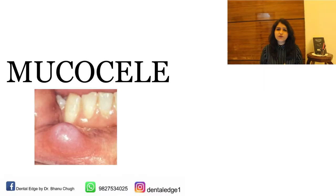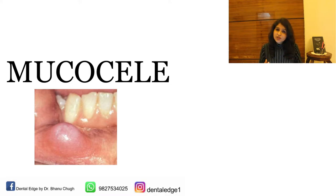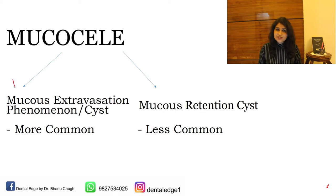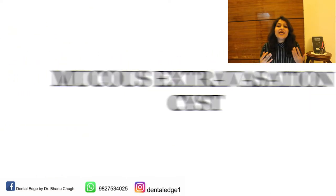Mucocele is a common lesion of the oral mucosa and it's a clinical term based on the location of the lesion, the way the lesion appears, how it feels on palpation, the age of the patient, and the history given by the patient. Histopathologically, once the lesion is submitted for biopsy and the slide is examined, it is of two types: a mucus extravasation cyst, which is very common, or a mucus retention cyst, which is much less common.